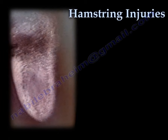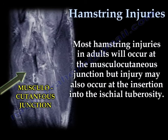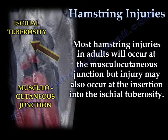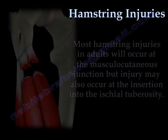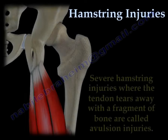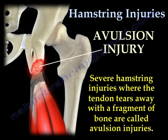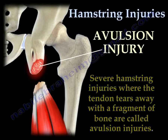Most injuries of the hamstring occur at the musculotendinous junction, but the injury may also occur at the insertion into the ischial tuberosity. Severe hamstring injuries where the tendon tears away with a fragment of bone are called avulsion fracture injuries.